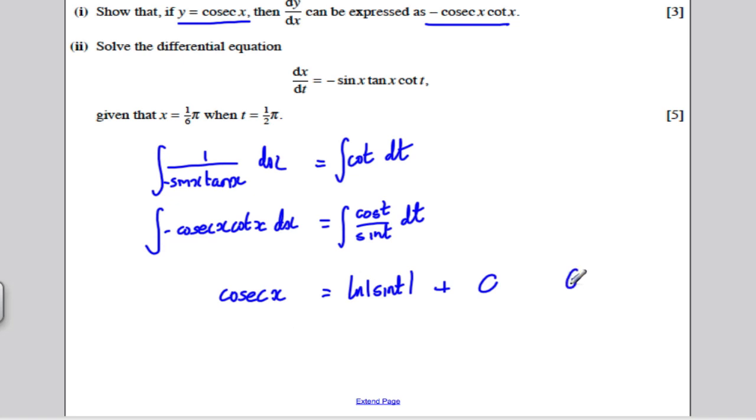And now I'm going to take care of my constant by adding in my constant at that point. Now, that's the general solution of this differential equation. I want the particular solution because they've given me some boundary conditions. They've told me that when x is pi by 6, t is pi by 2.